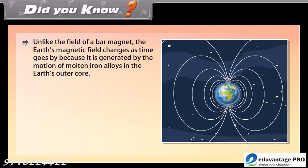Did you know? Unlike the field of a bar magnet, the Earth's magnetic field changes as time goes by because it is generated by the motion of molten iron alloys in the Earth's outer core.